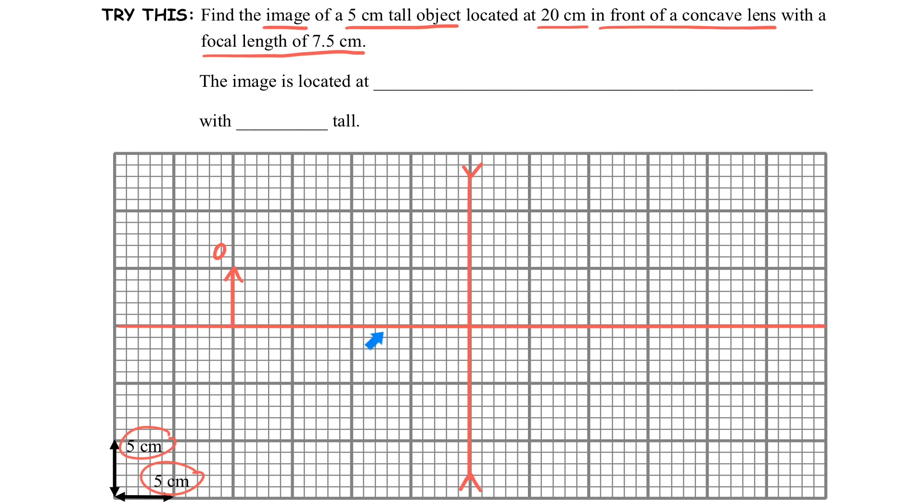And then one thing we have to mark is the focal length. Focal length is the distance from the focus to the lens. So we can mark down the focus here. Usually we have at least two focus.